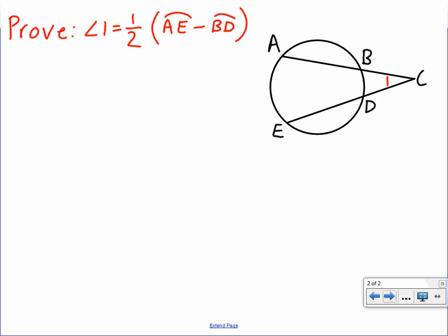So if we look at our circle, we're going to prove that angle 1 is half the measure of the difference of arc AE and arc BD.